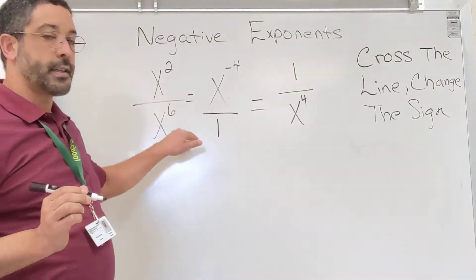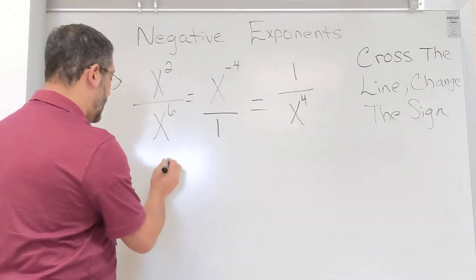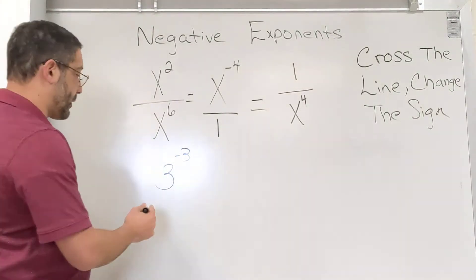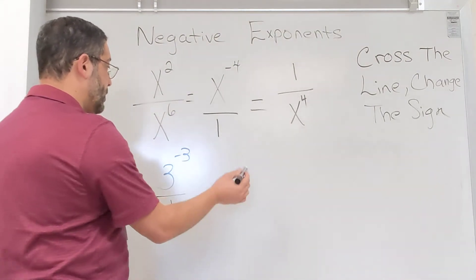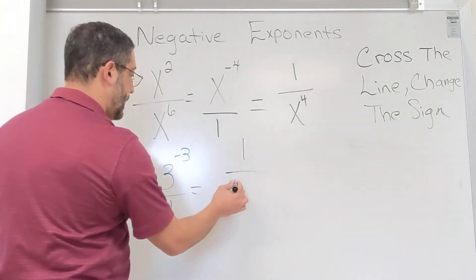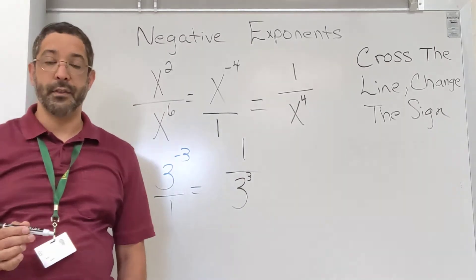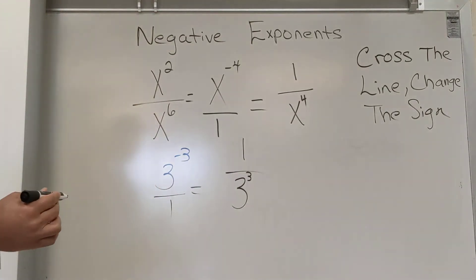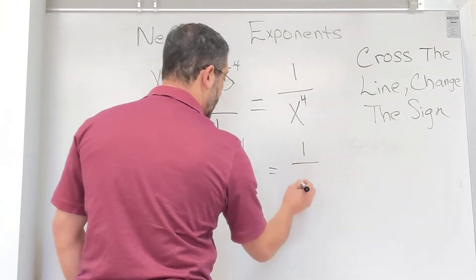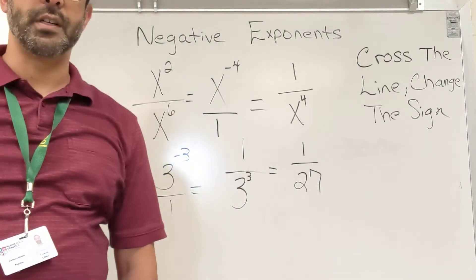That's all you're going to do — cross the line and change the sign. So if I have 3 to the negative third, I think of it as a fraction: 3 to the negative third over one. I rewrite it as its reciprocal — cross the line, change the sign — and I go from 3 to the negative third to one over 3 to the third, which equals one over 27. Because 3 × 3 = 9, times 3 = 27.